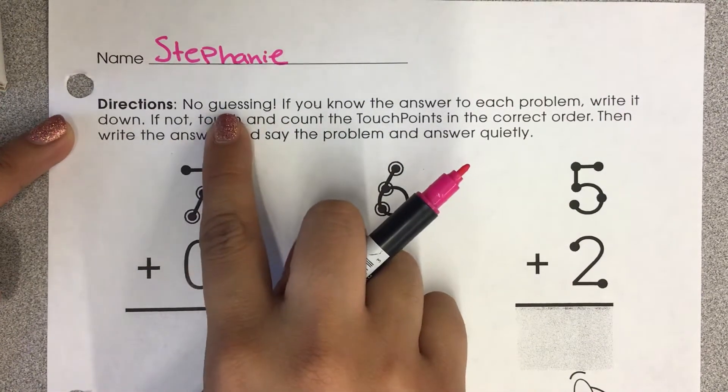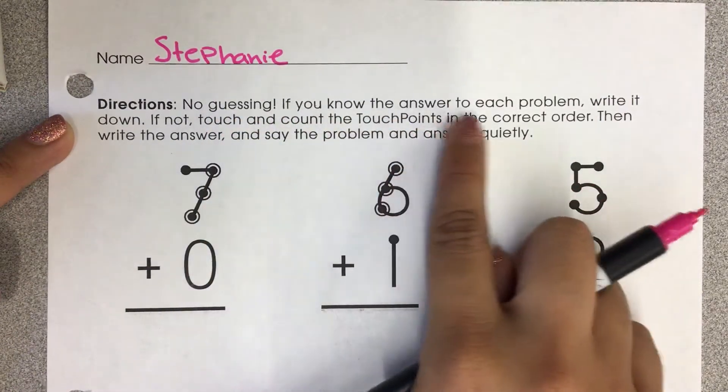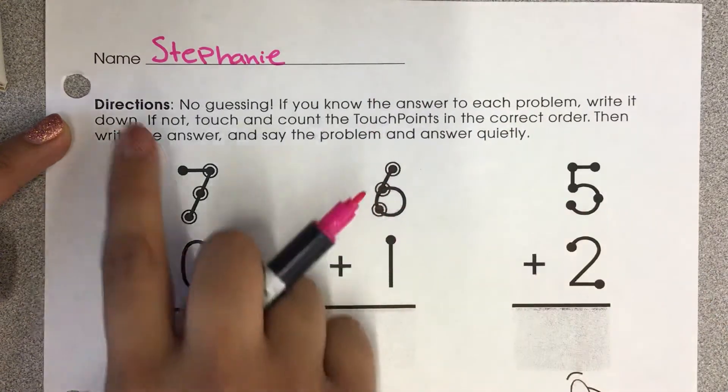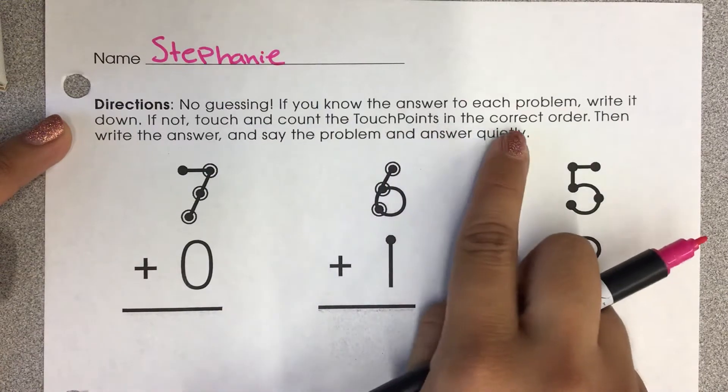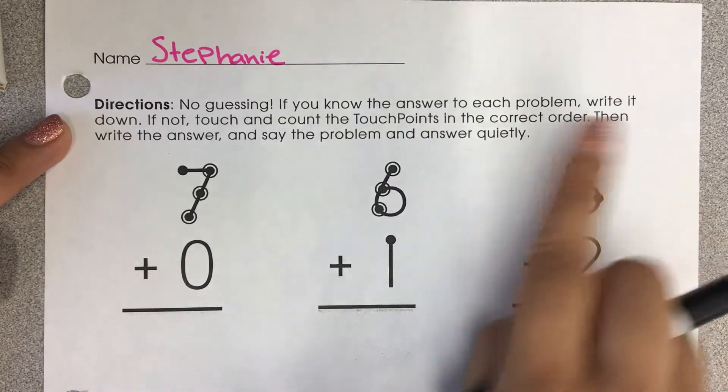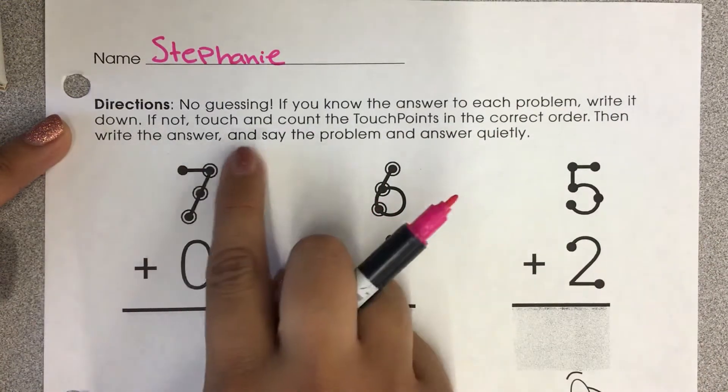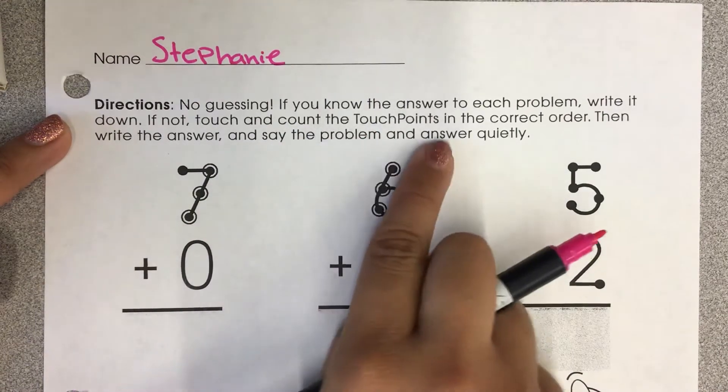So it says, no guessing. If you know the answer to each problem, write it down. If not, touch and count the touch points in the correct order. Then write the answer and say the problem and answer quietly.